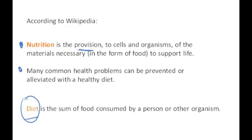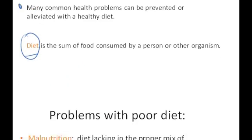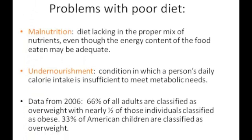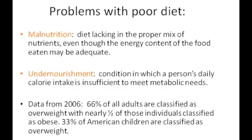So those are the definitions of those words. Since diet is what's provided to us, nutrition is the materials necessary to support life. There are problems associated with a poor diet. Two words of note are malnutrition and undernourishment. Malnutrition is when the diet — the sum total of the food — is lacking in the proper mix of nutrients, even though the energy content of the food eaten may be adequate.